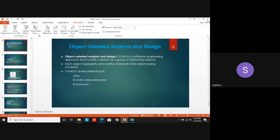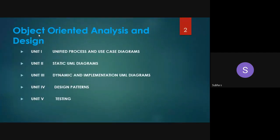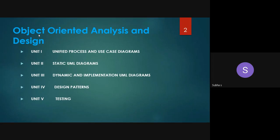Moving on to the syllabus: in Unit 1, we are going to focus on the Unified Process and the Use Case Diagram. There are many diagrams — we are going to see eight main diagrams, the first of which is the Use Case Diagram. Unit 2 fully deals with all the Static UML Diagrams. Unit 3 deals with the Dynamic UML Diagrams. Unit 4 covers Design Patterns — what patterns are used in the design part, since we have different design patterns in our coding. Unit 5 covers testing tools and automation tools that are used.